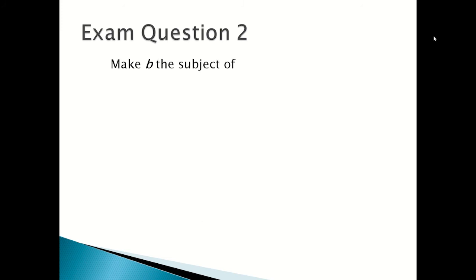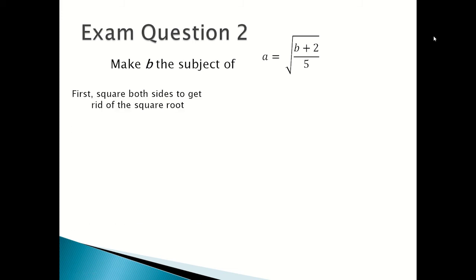Now we're going to look at the second exam question. Make b the subject of a equals the square root of b plus 2 over 5. First you square both sides to get rid of the square root, so you'll get a squared equals b plus 2 over 5.